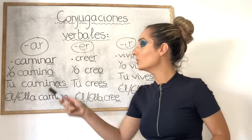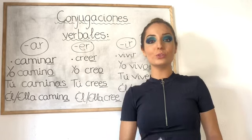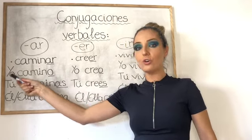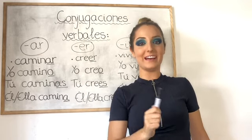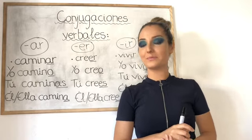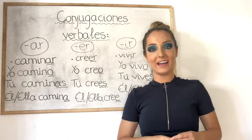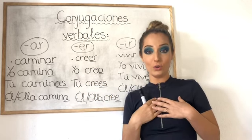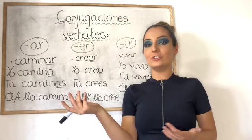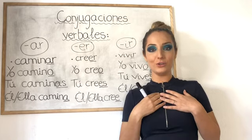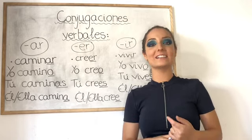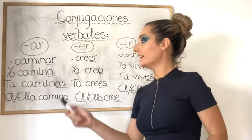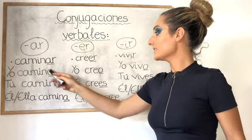For 'you,' we have tú caminas — you walk. Let's revise: yo camino, tú caminas. How will you say he or she walks? Él or ella camina. We are changing AR to A: camina. Yo camino, tú caminas, él/ella camina. Remember, every single verb ending in AR in the infinitive — you will always use these same endings.